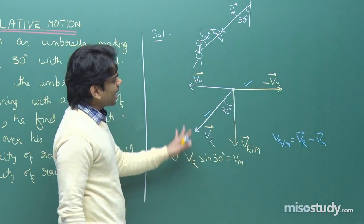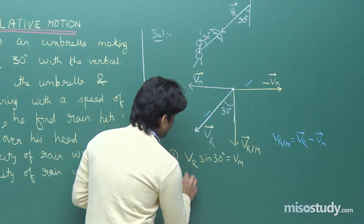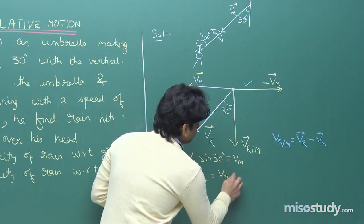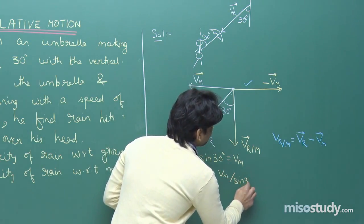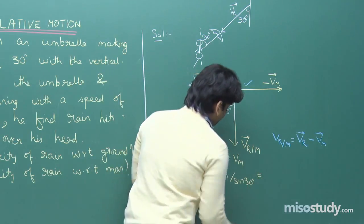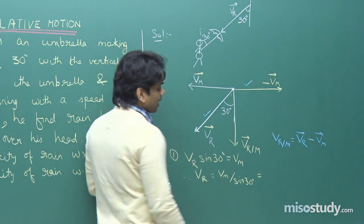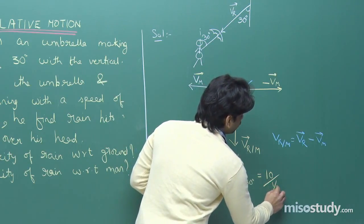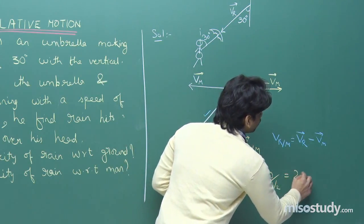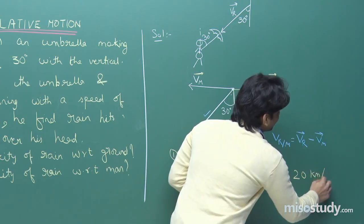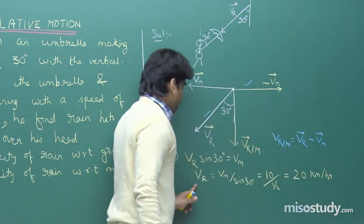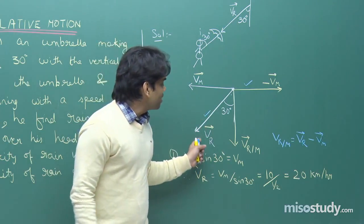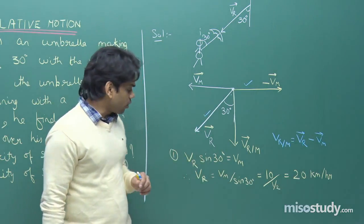Therefore, V_R = V_M divided by sin 30°. Since V_M = 10 km/h and sin 30° = 1/2, we get V_R = 10 divided by (1/2) = 20 km/h. So the velocity of rain with respect to the ground is 20 km per hour.